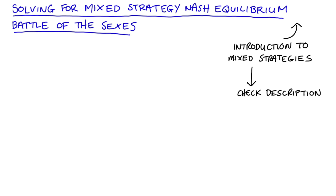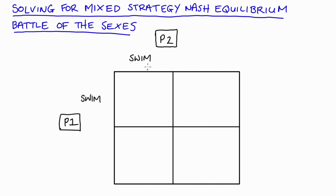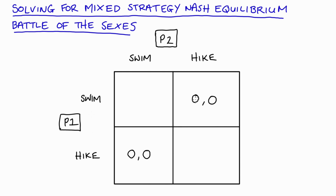For this video I'll start by setting up the game. I have a two-by-two matrix with two players — player one and player two — and our players are choosing whether to go swimming (action: swim) or to go hiking (action: hike). The worst case for either player is ending up not doing the same activity together, so both players get zero if one plays swim and the other plays hike. Player one really likes swimming, so if both play swim, player one gets a payoff of three while player two gets a payoff of one.